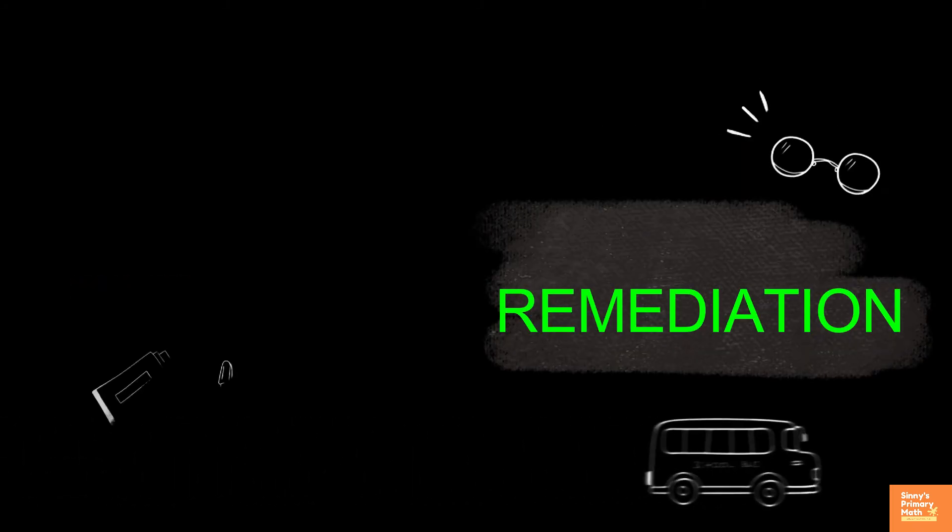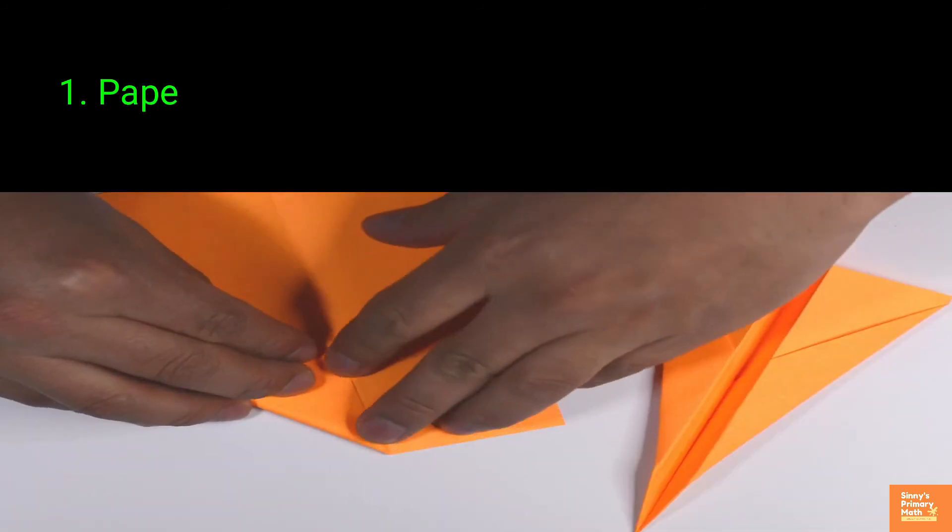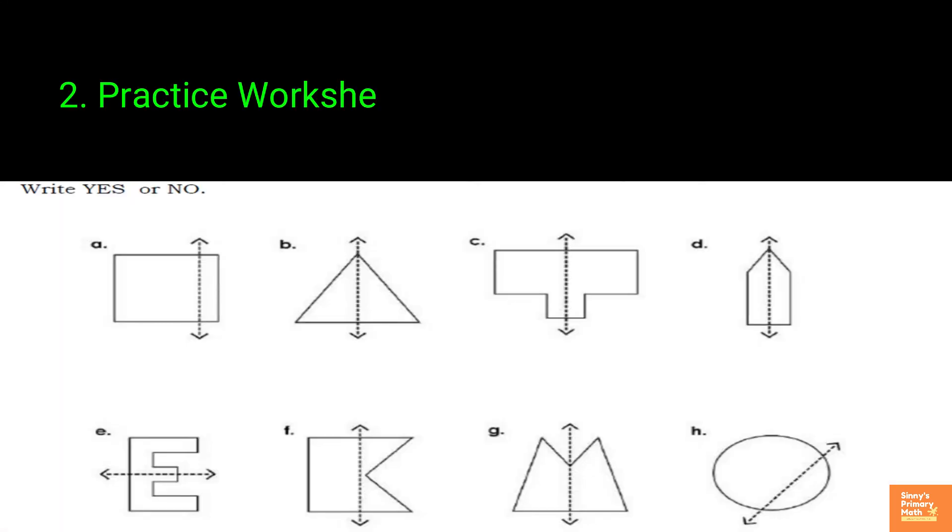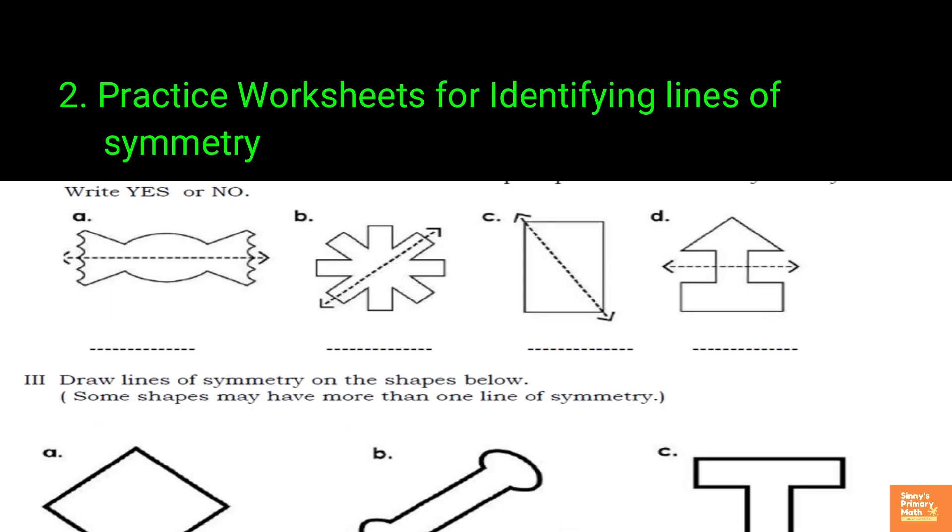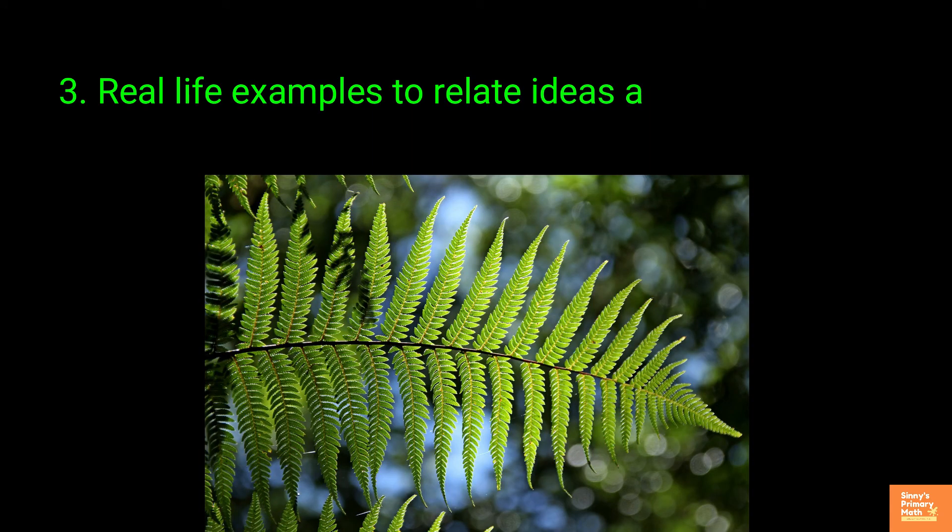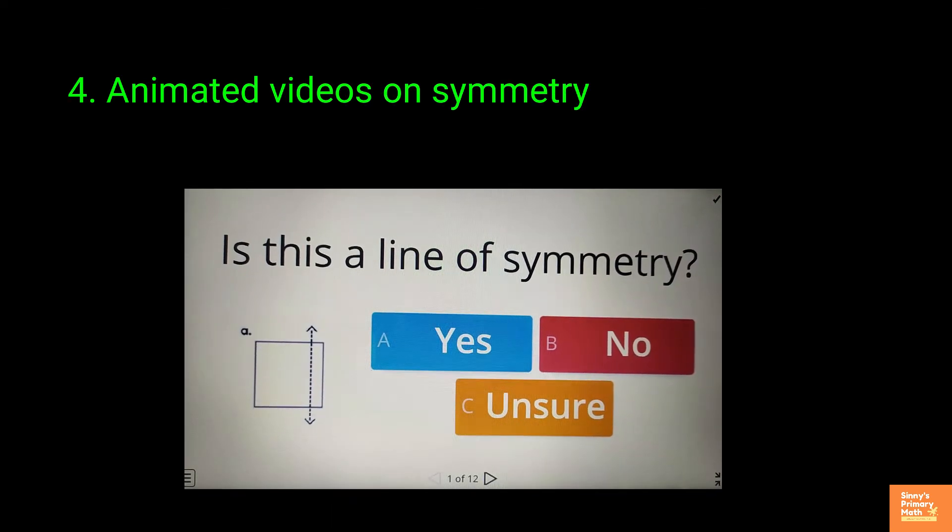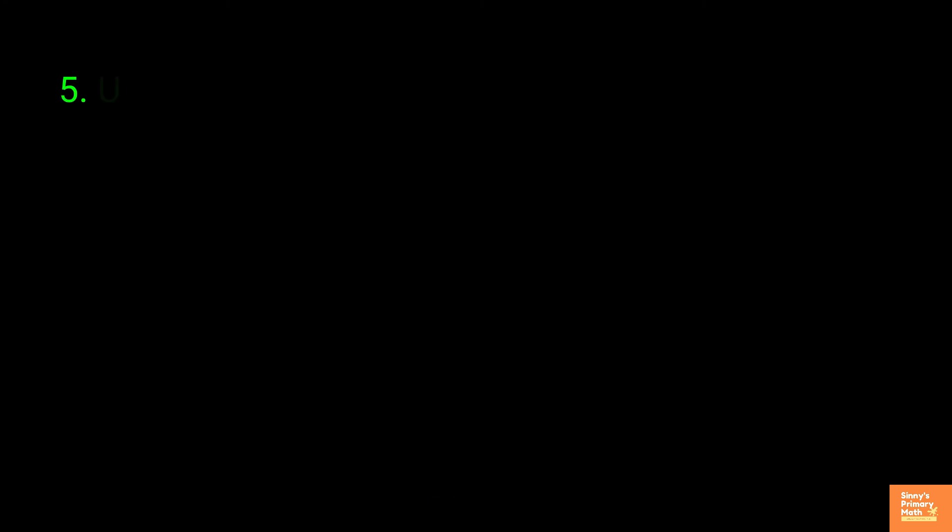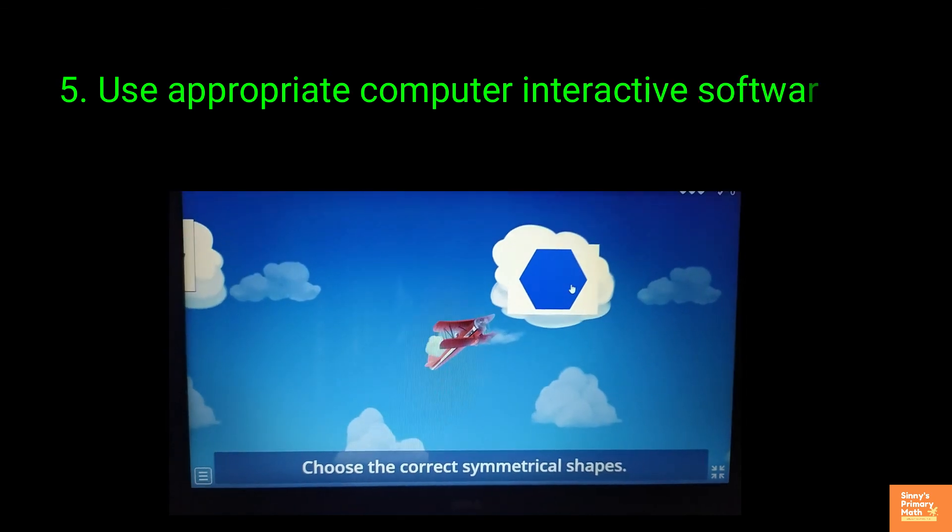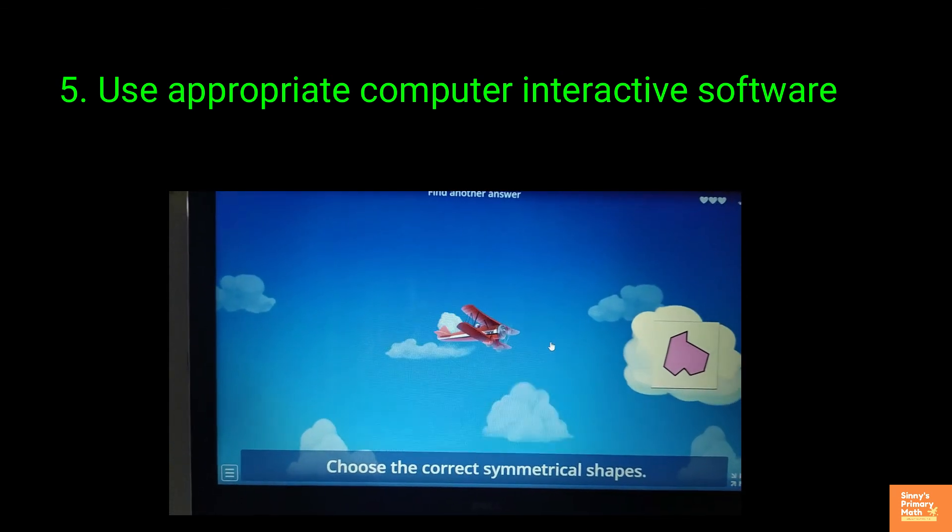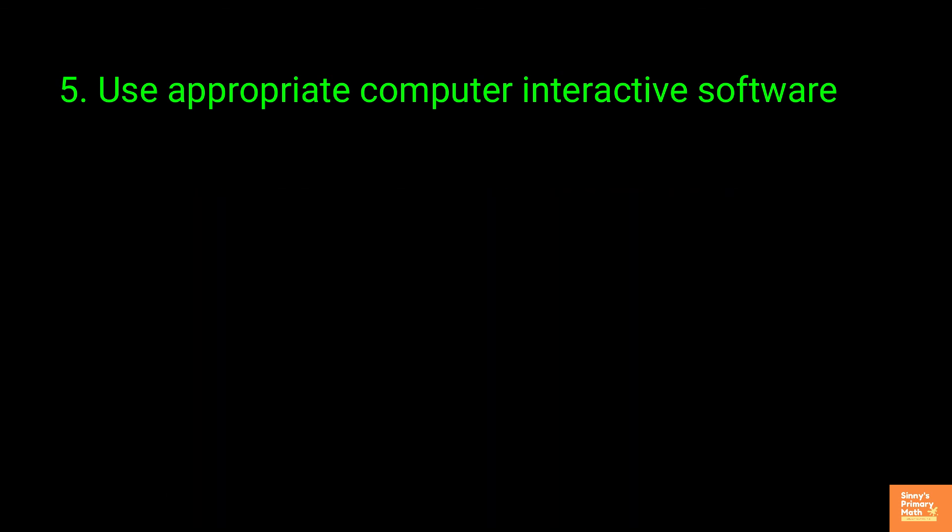Remediation: Paper folding activity, hands-on activity, collaborative project work, practice worksheets for identifying lines of symmetry, real life examples to relate ideas about symmetry, animated videos on symmetry, use appropriate computer interactive software. Use of dynamic geometry software will enable children making a connection between what they are thinking and a visual for what is really happening.